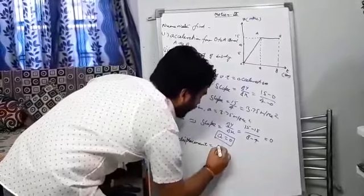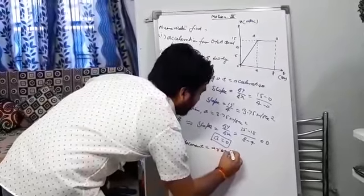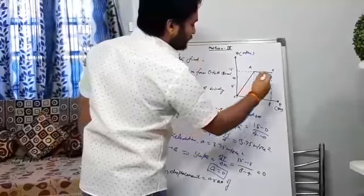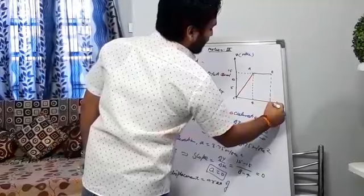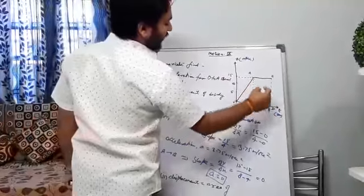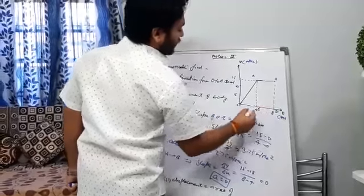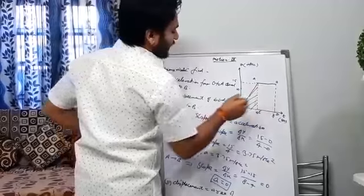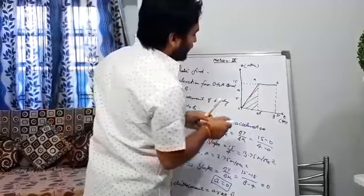You know the area of velocity-time graph defines the displacement. So I am just marking some coordinates, labeling it, this is D. If I want to find the area, we have to find two things: one is area of this triangle, and second one is area of this rectangle.